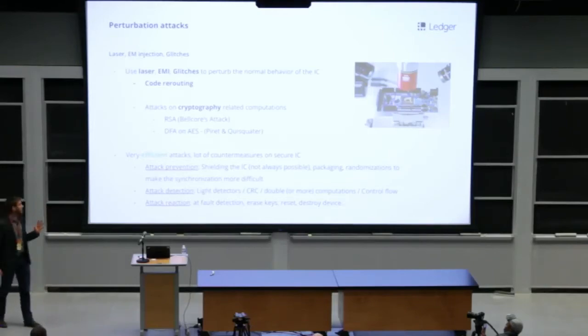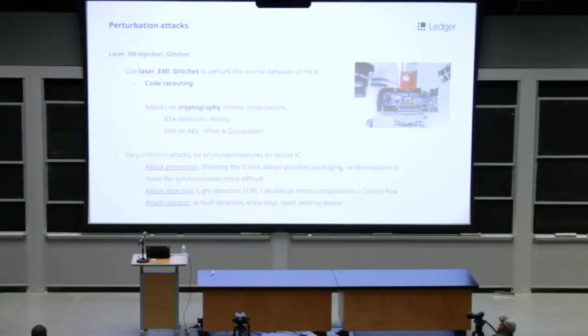Second, perturbation attacks. The idea of this kind of attack is to perturb the normal behavior of the circuit during the execution of the algorithm. This can be done by different means. The attacker can induce glitches on the clock or on the power supply. This will induce faults. It can also use EMI electromagnetic injection, or more efficiently, it can use laser. Laser is very efficient.